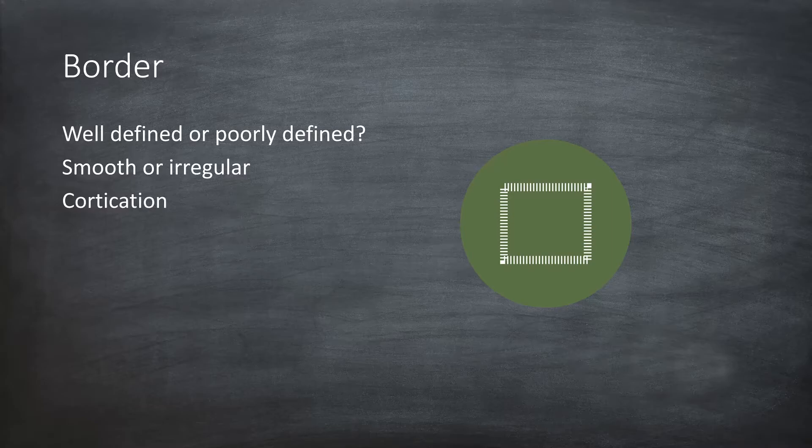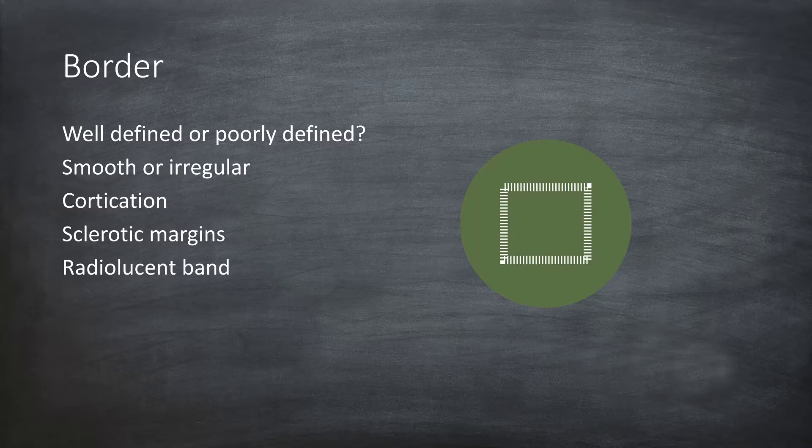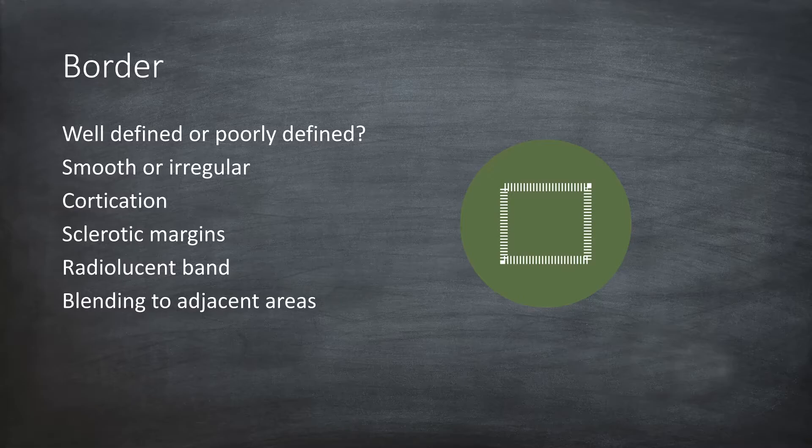Frequently, a cyst or a benign tumor is well-corticated. Is the margin sclerosed? Is there a radiolucent band around the lesion? Or is the lesion blending to the neighboring structures? The more you describe, the closer you will be to the correct diagnosis.